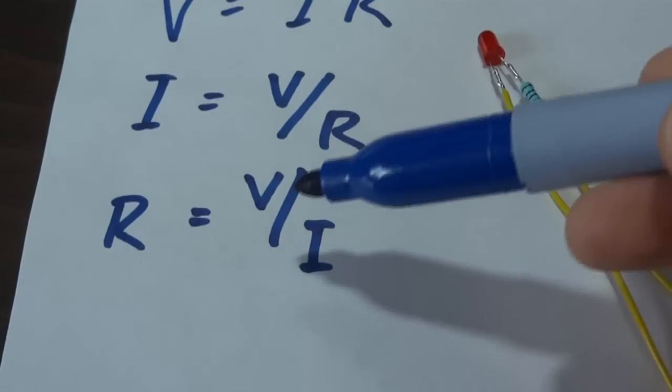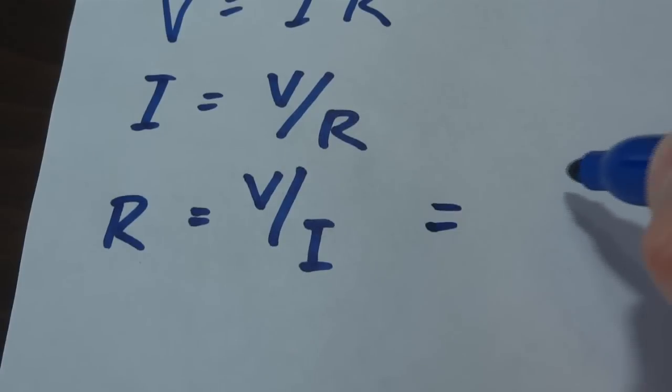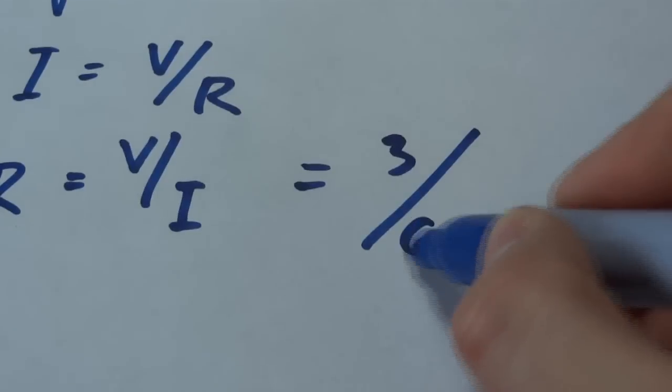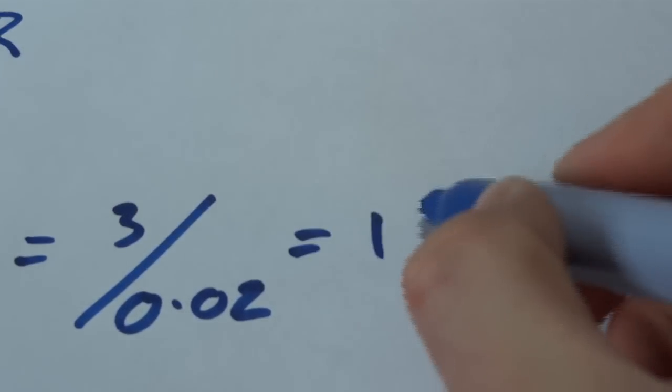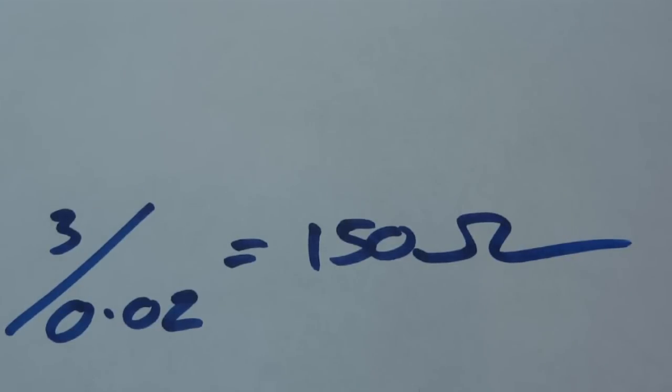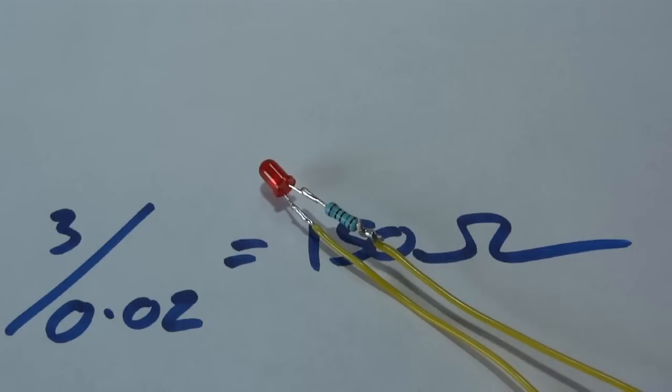Therefore we need to calculate the resistor, so we can use the bottom formula here. So we know that we've got to drop 3 volts over 20 milliamps, which is 0.02 amps, and I happen to know that that equals 150 ohms, which happens to be the resistor that I've already wired in there, which is why it runs fine.